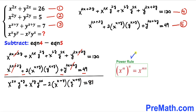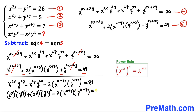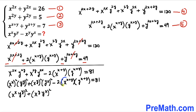Recalling the power rule of exponents and applying it, x^(2x) becomes (x^x)², y^(2y) becomes (y^y)², x^(2y) becomes (x^y)², and y^(2x) becomes (y^x)². So we get: (x^x)²(y^y)² + (x^y)²(y^x)² − 2 × x^(x+y) × y^(x+y) = 81.